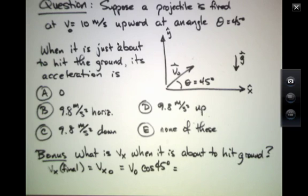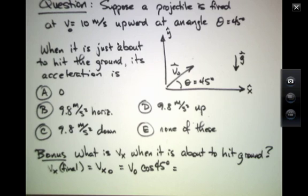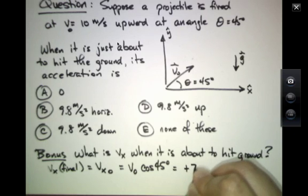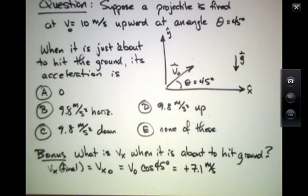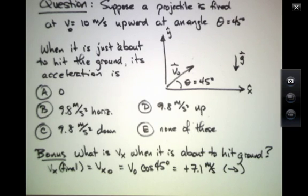If you plug in 10 meters per second and calculate cosine of 45, or remember that it's 1 over square root of 2, this comes out to be plus 7.1 meters per second, pointing to the right, because v naught was initially pointing to the right.